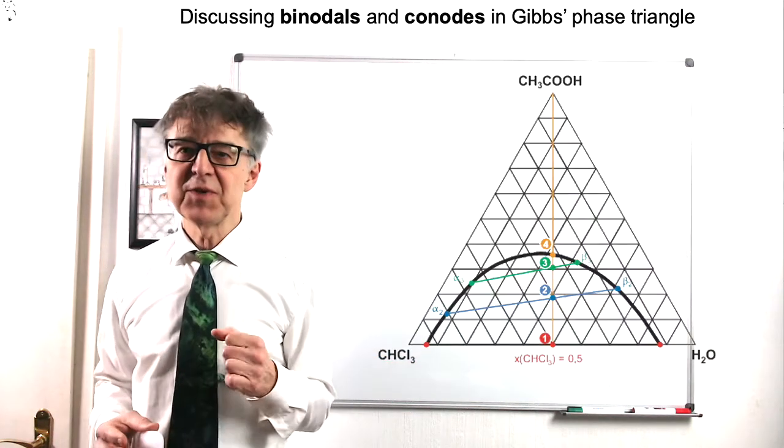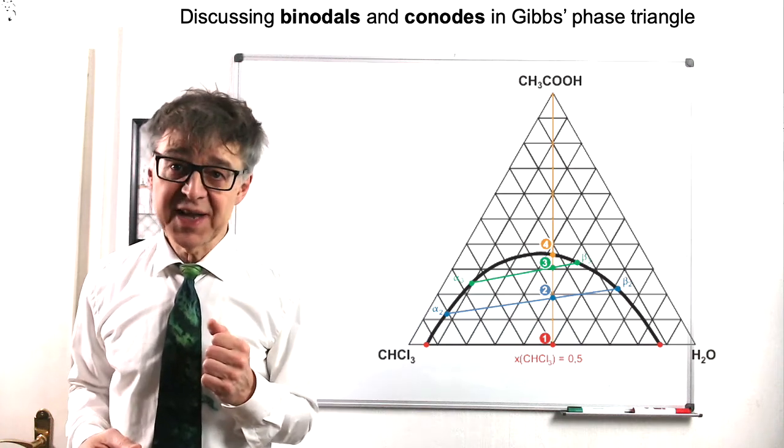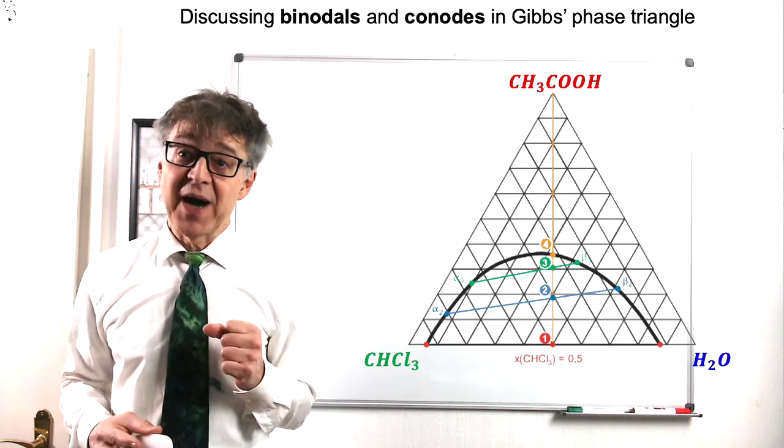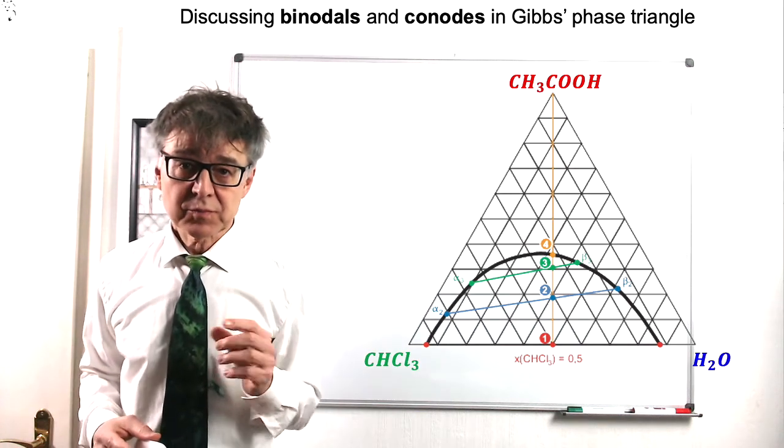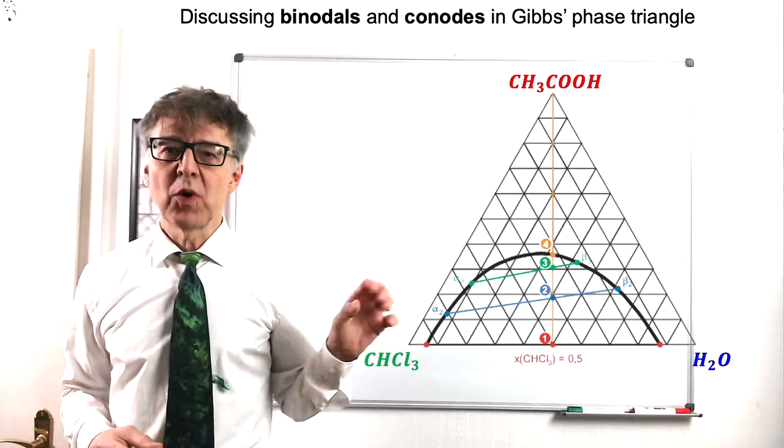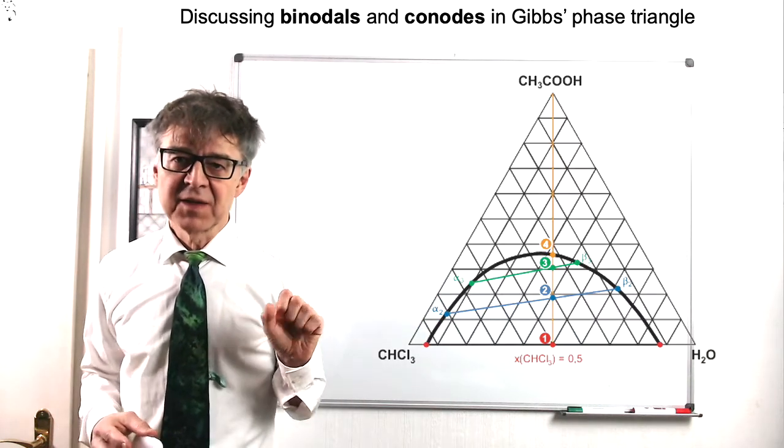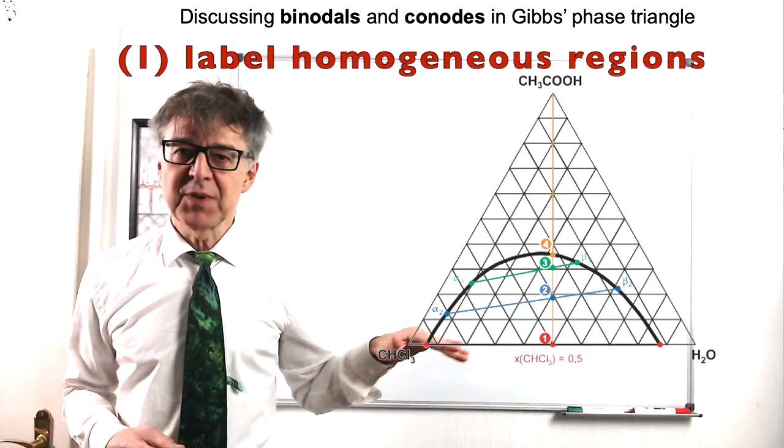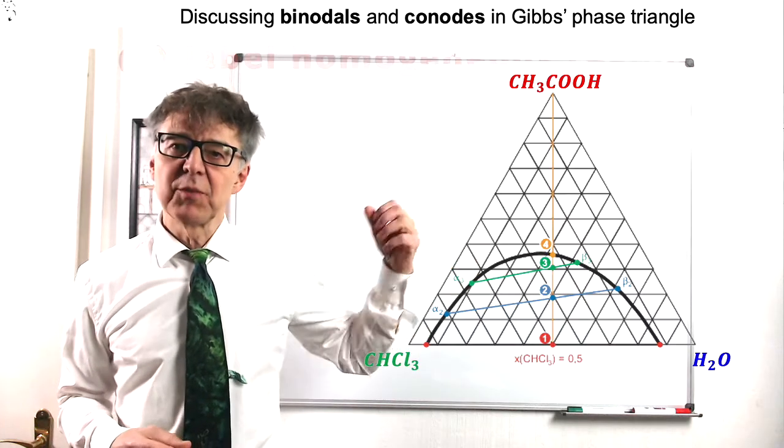Homogeneous and heterogeneous regions may also occur in the phase triangle diagram, and so are binodals. Here is the diagram of the three solvents chloroform, water, and acetic acid. The system is heterogeneous below the binodal and homogeneous above.